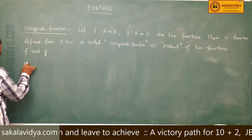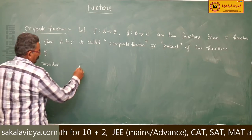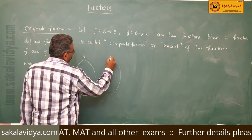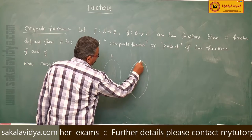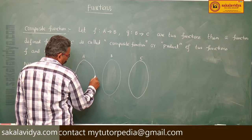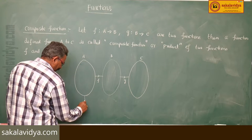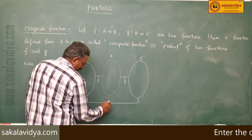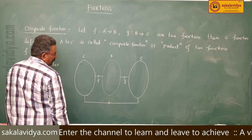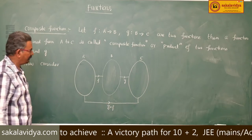Consider set A, set B, and set C. From A to B we have function f, and from B to C we have function g. The composite function from A to C is denoted by g∘f, mapping A to C.